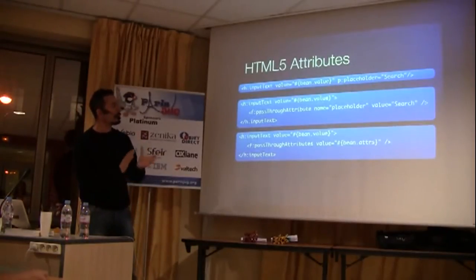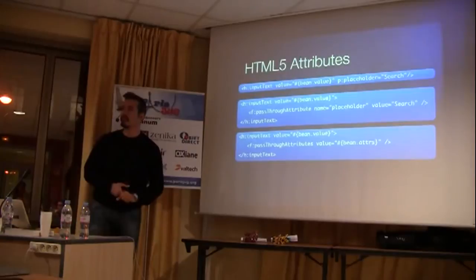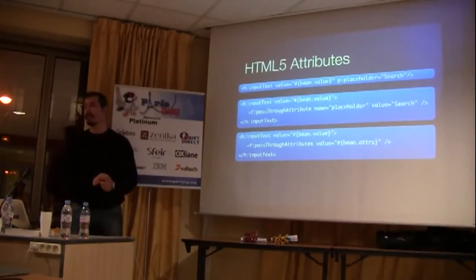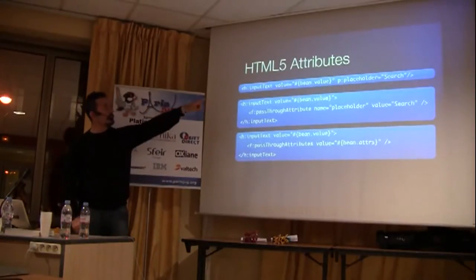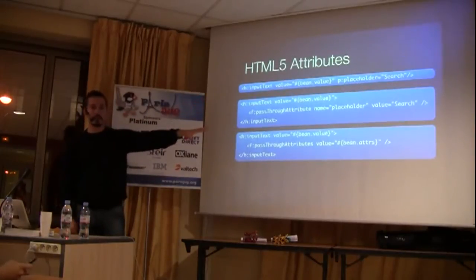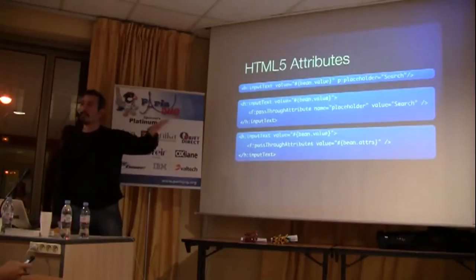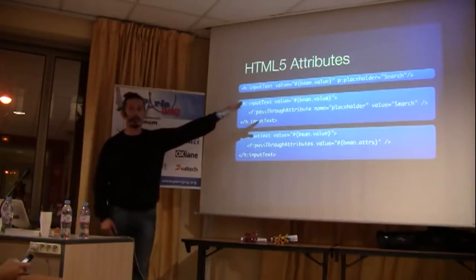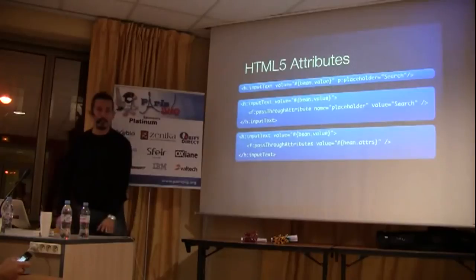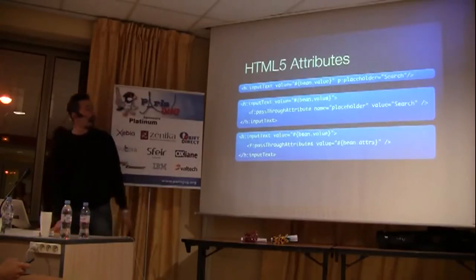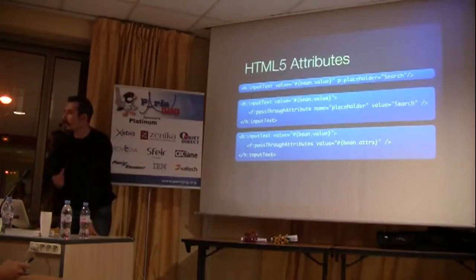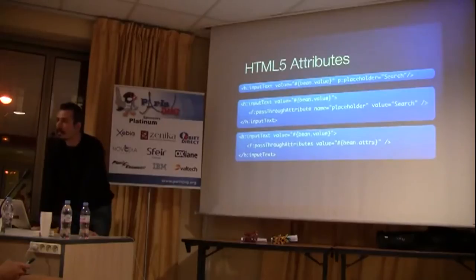Any type of pattern attribute, the type attribute and things like that — whenever JSF sees this 'P' namespace prefix, it will just put them in the pass-through attributes. And it's up to the component author. Now in PrimeFaces, we have to make sure that we render pass-through attributes as well. So the good thing is that if HTML6 comes, you can just use that HTML6 attribute on that input tag and it will be in the final rendered markup.